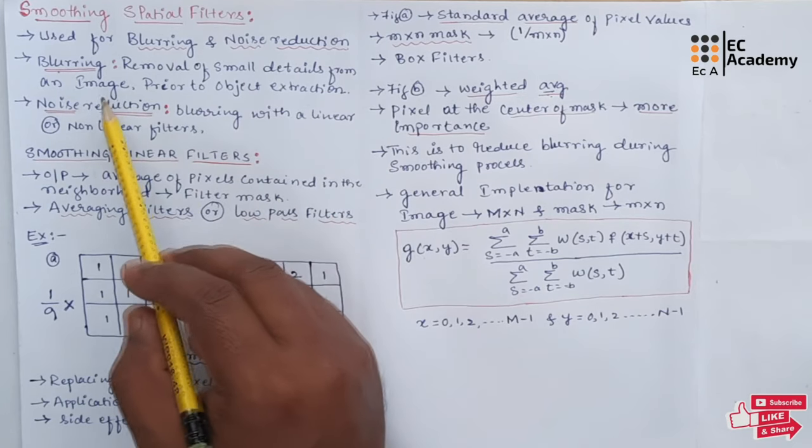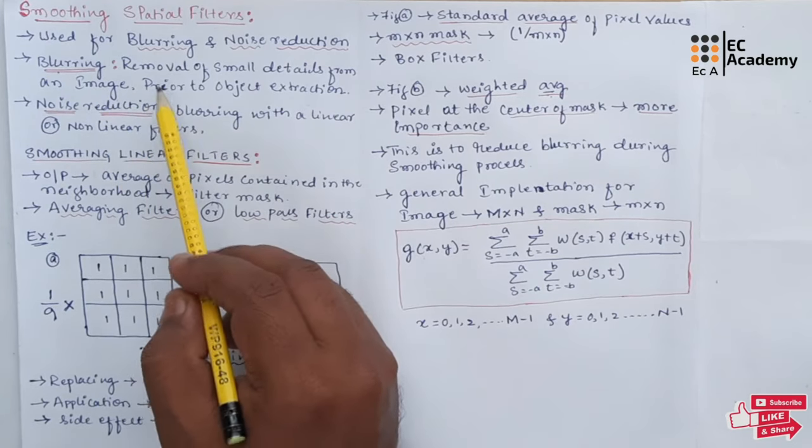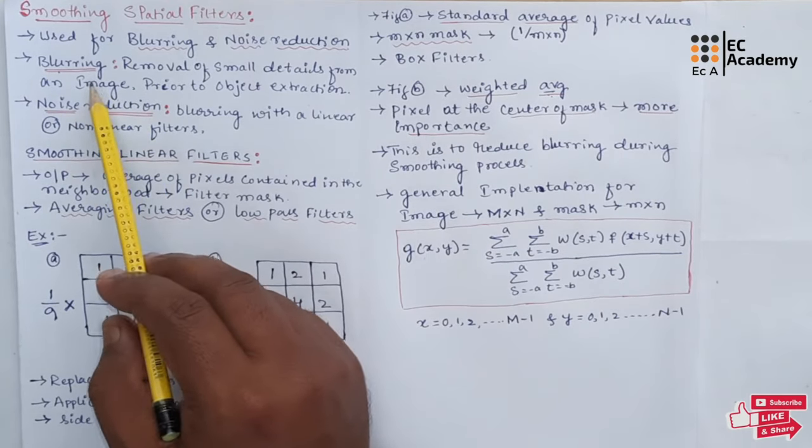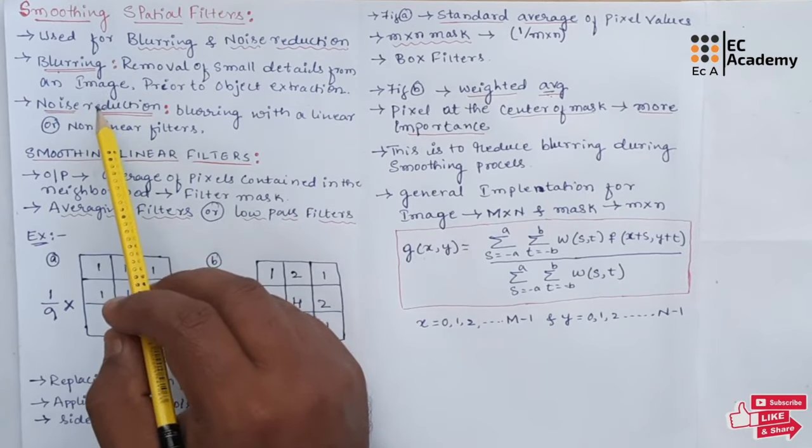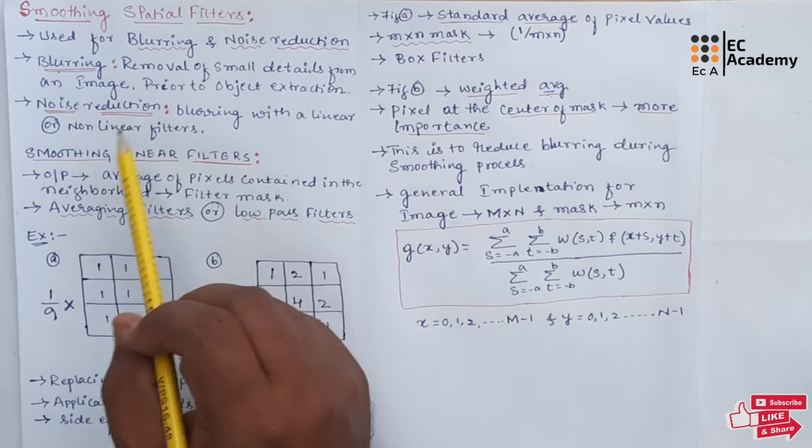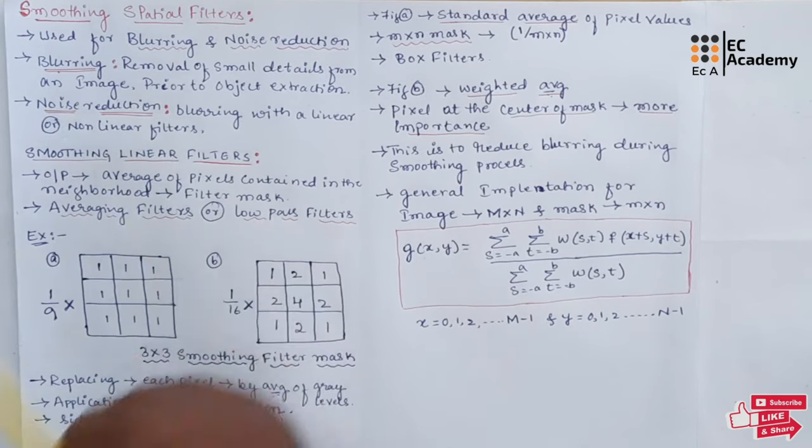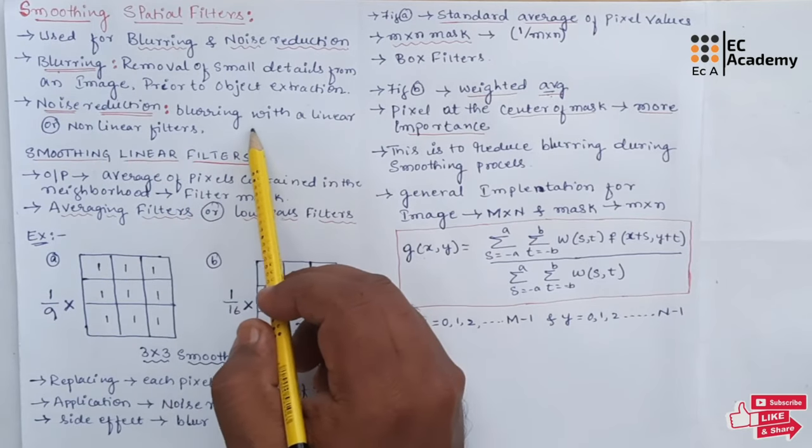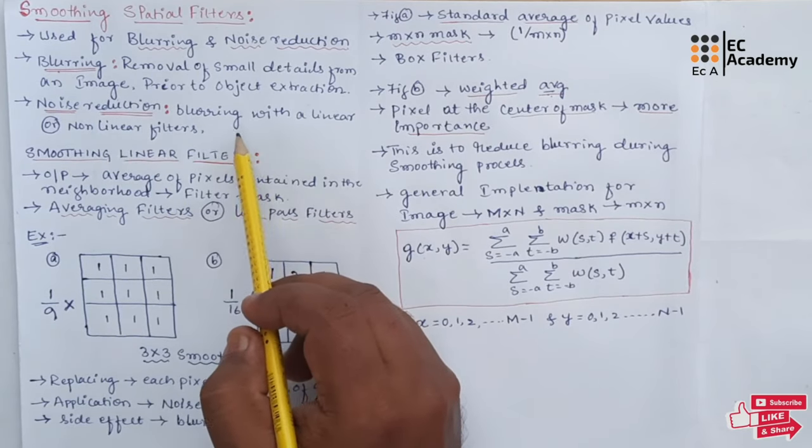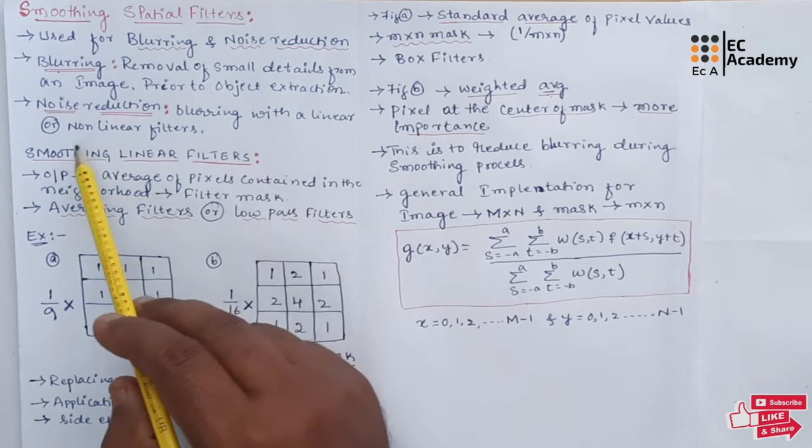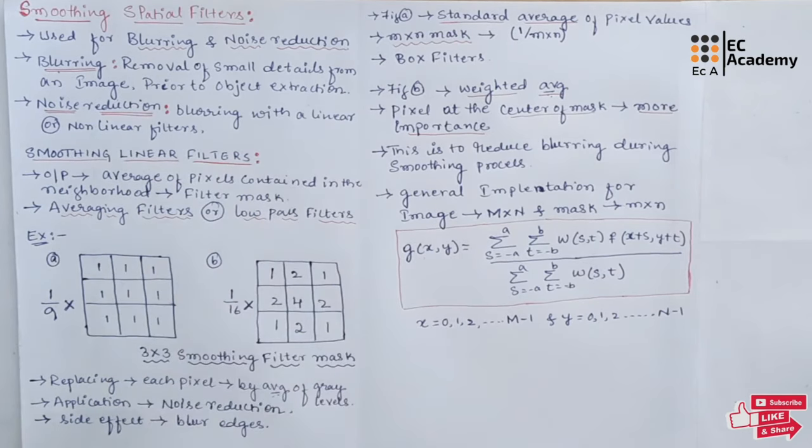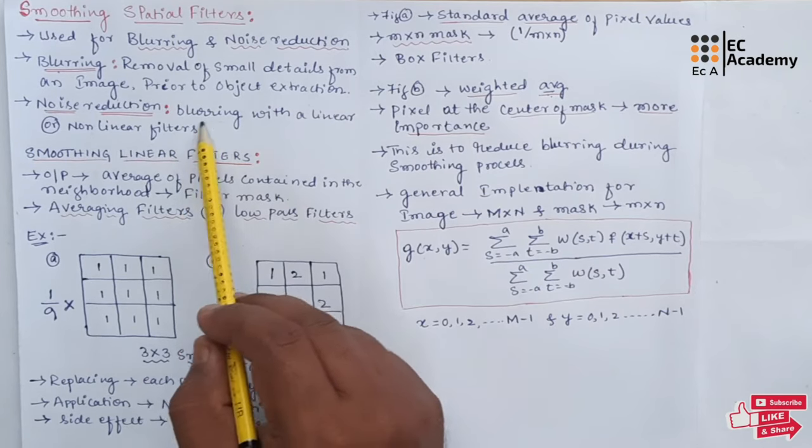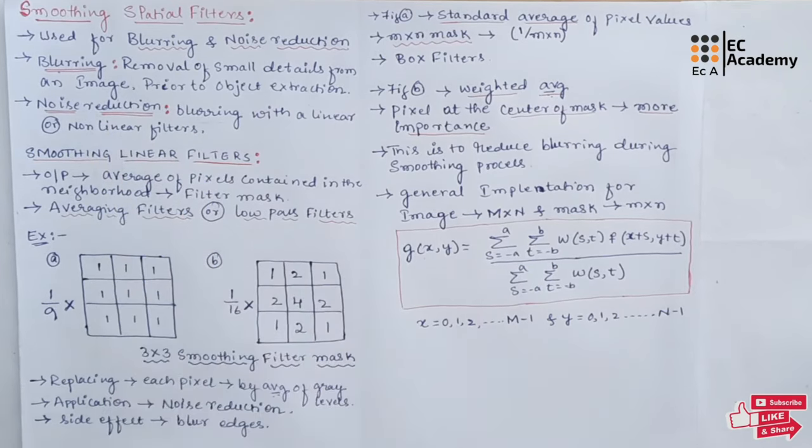So blurring is done in pre-processing which means before processing an image we will do the operation of blurring. So blurring is done to remove some small details from the image before some processing. Noise reduction can be accomplished with the help of blurring with a linear or non-linear filters. So we can use linear filters or non-linear filters and use the technique of blurring to reduce the noise.